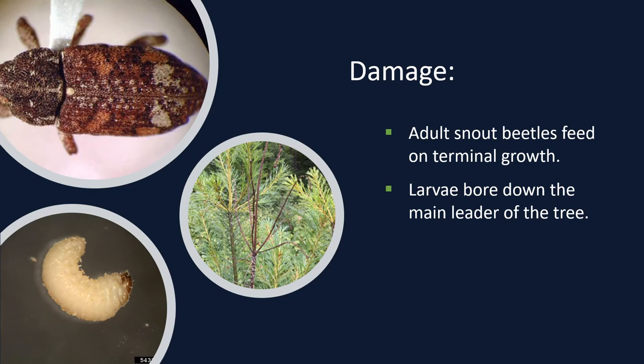The larval stage, which lives beneath the bark, is white with a distinct brown head. When mature, it reaches approximately 7 millimeters in length, is legless, and has a slightly C-shaped appearance. Both the larvae and the adult are responsible for the damage. The adult feeds on terminal growth causing damage, and the larvae bore down the main leader of the tree.